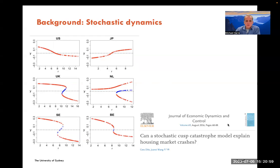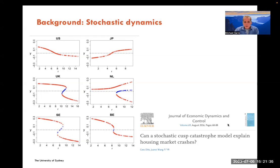We see smooth variation for both the USA and Japan as r changes. But for the UK and the Netherlands, if we change r smoothly, the dynamics go over two tipping points. In the analysis of Dixon and Wang, they argued there was a tipping point in the UK and the Netherlands but not in the US and Japan — contrary to perhaps what we might believe, given the US housing market crisis of 2007-2008 and Japan's market crash in 1989-1990.